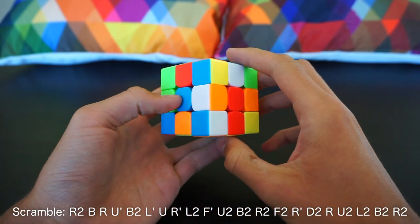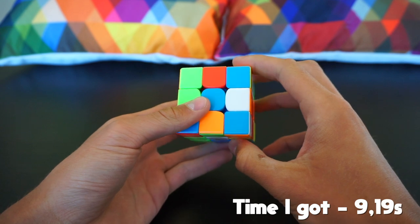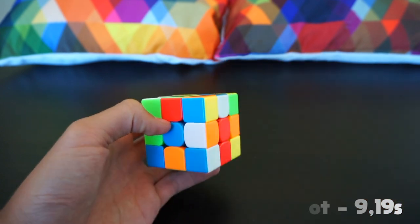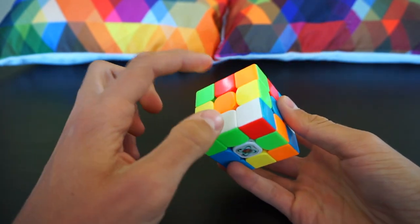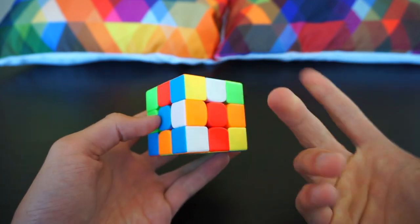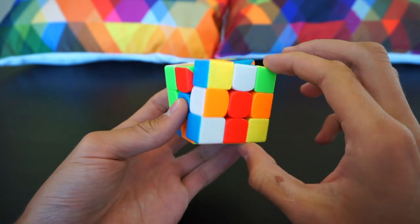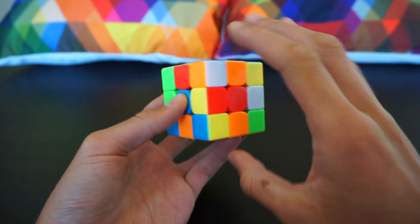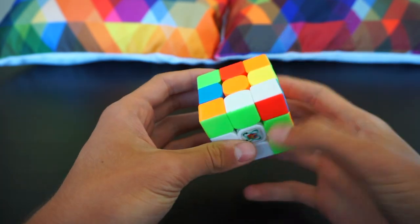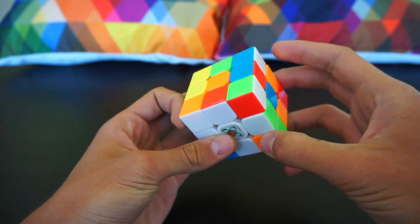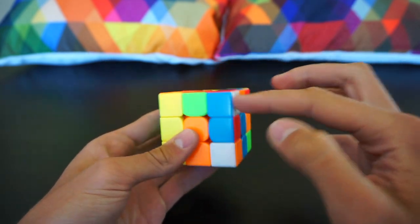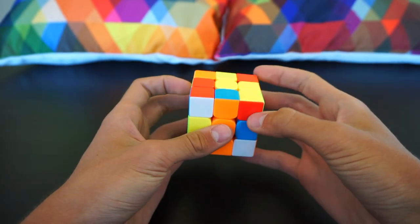Okay, so this is the third solve and this was a 9.19 second solve. Here we see that I will make a misaligned cross. First I solve these two by doing R, B prime, R2, and then I did these two, so I did D prime.